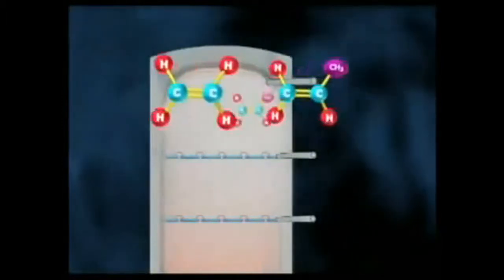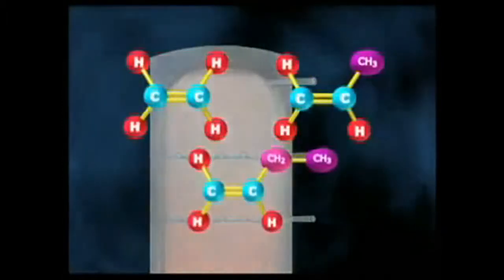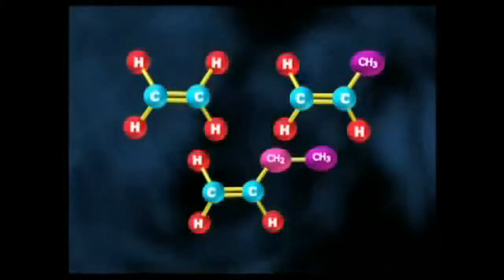Light hydrocarbons break down to the lighter alkenes, including ethene, propene and butene, which are useful for plastics manufacturing.